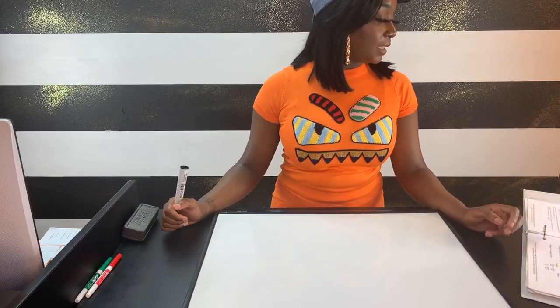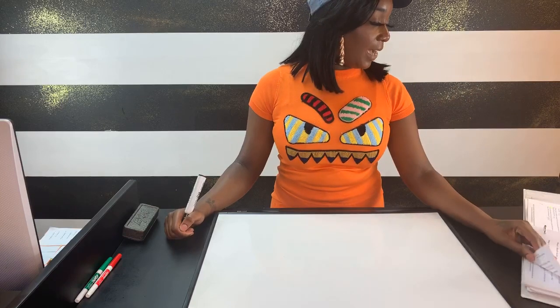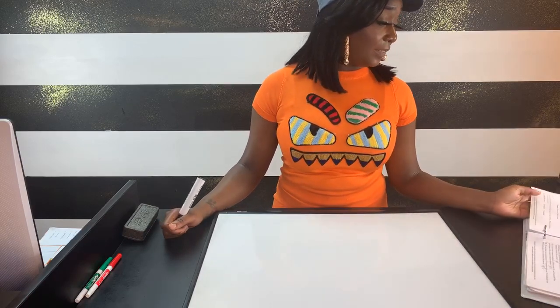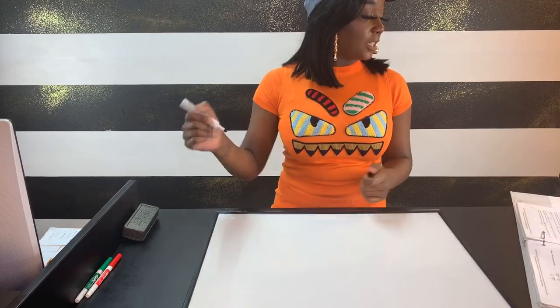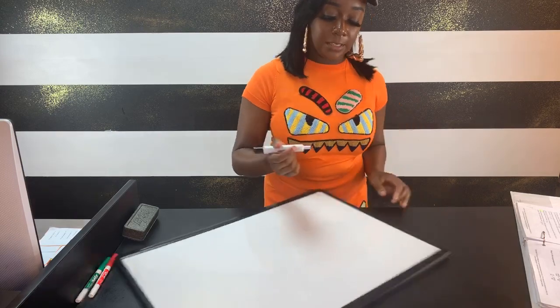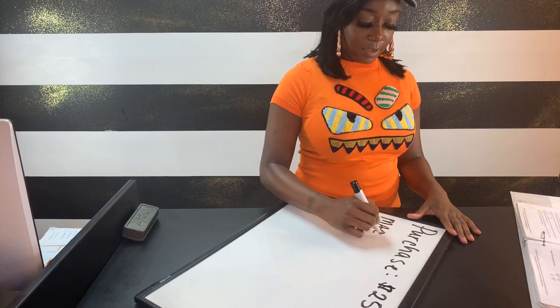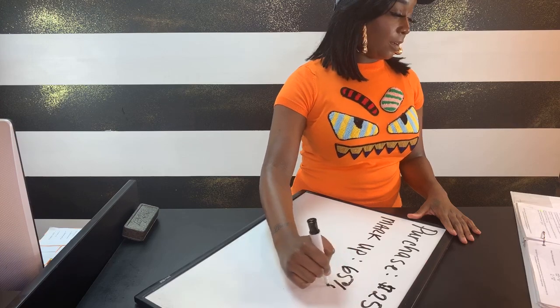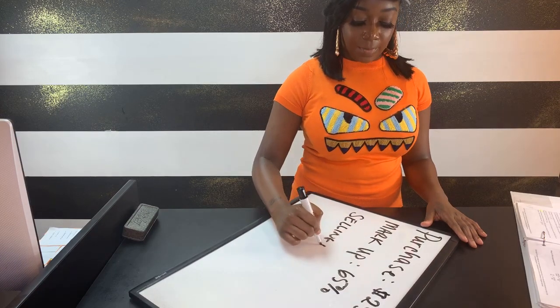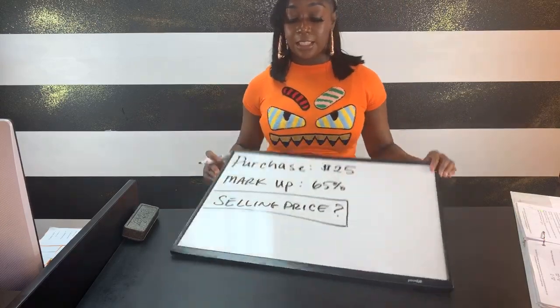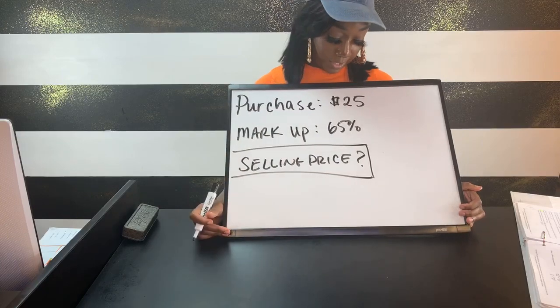This is our ninth example for percentages — we did eight in the first video and we have more in this one. It says Jasmine purchased sundresses for $25 each wholesale, so her purchase price was $25. If she marks up the price by 65%, what will be her selling price? Basically, she wants to mark her original $25 price up by 65%, and we need to find how much she'll actually sell the dresses for.